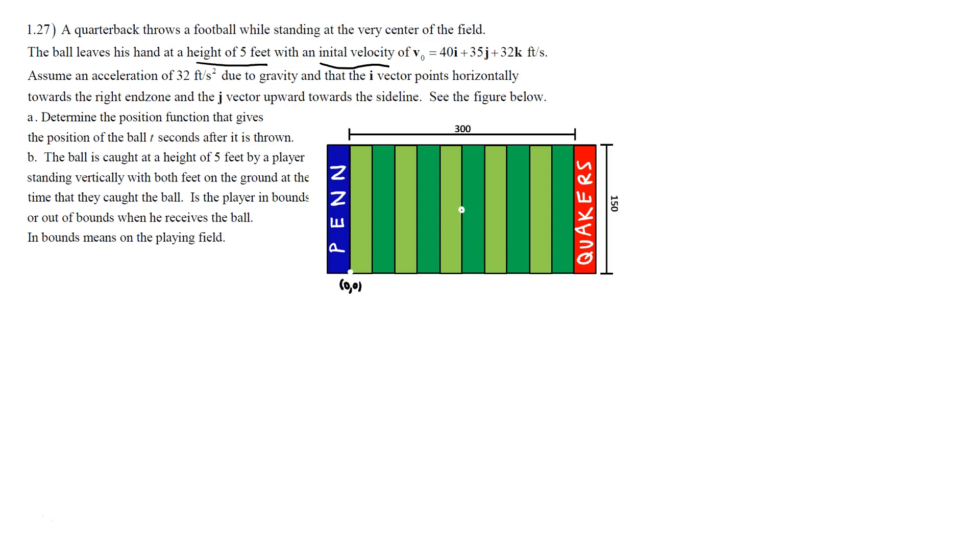Just using neglecting wind and air resistance, we have that the acceleration is just due to gravity and it's 32 feet per second squared. I is pointing in that direction there with J pointing in that direction. And so part A is asking us to determine the position function.